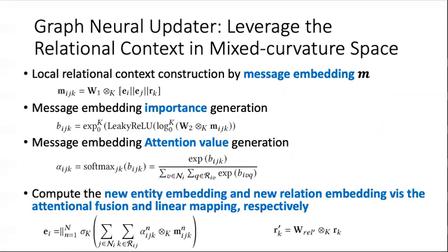The graph neural updater basically considers a number of important steps. First, we construct the local relational context by the message embedding. Then we compute the message importance and the attentional value of the message embedding. And after that, we combine the new entity embedding and the new relational embedding through attentional fusion and linear mapping respectively.